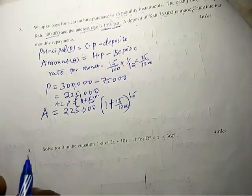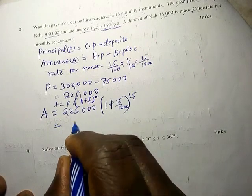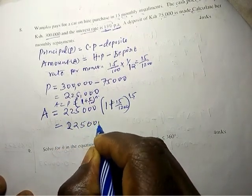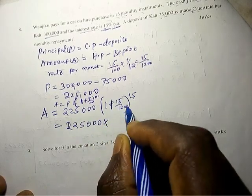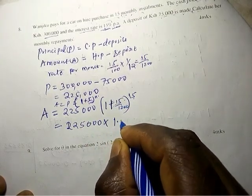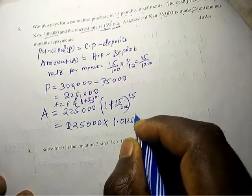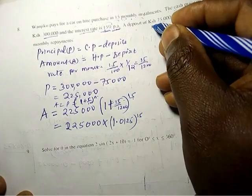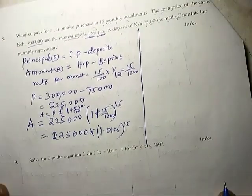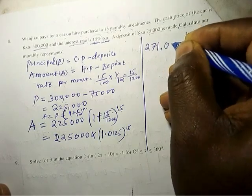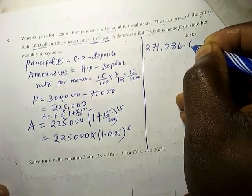Which will give us the amount. This is now 225,000 times 1.0125 raised to power 15. This will give us 271,086.60.